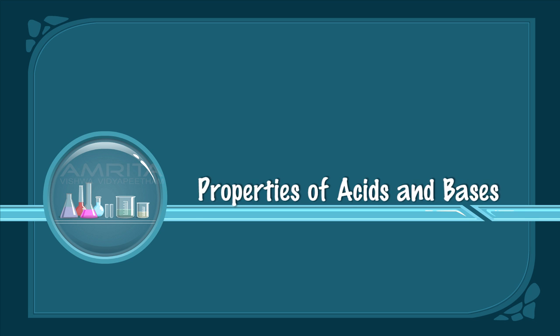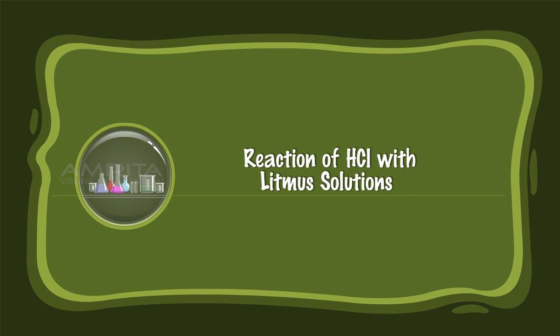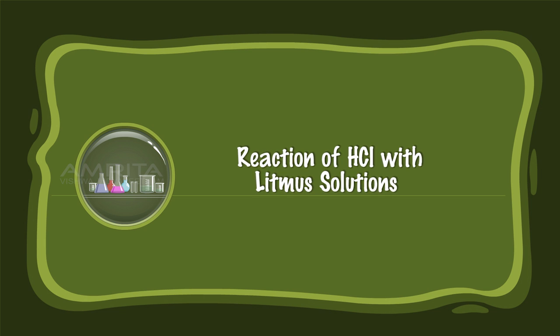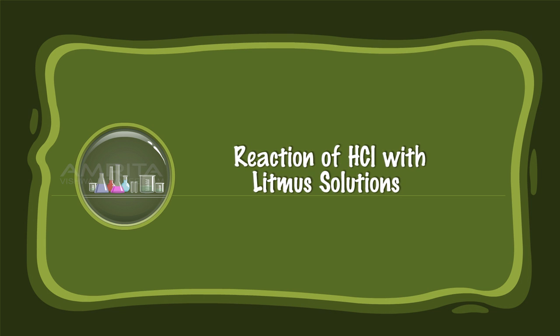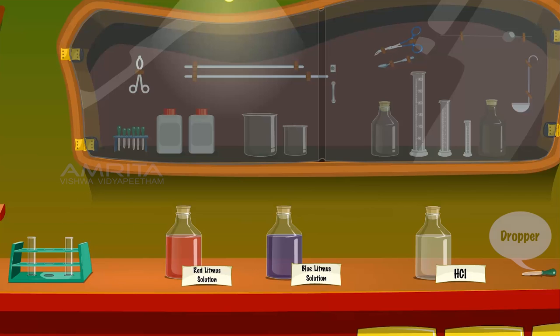Properties of Acids and Bases: Reaction of HCl with Litmus Solutions. We require two test tubes placed in a test tube rack, red and blue litmus solutions, HCl solution, and a dropper.